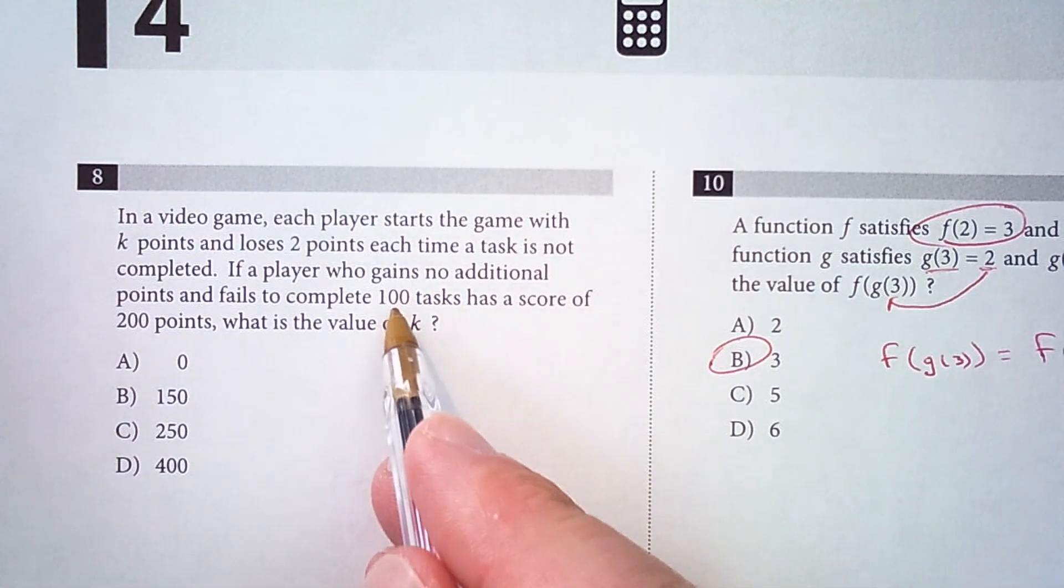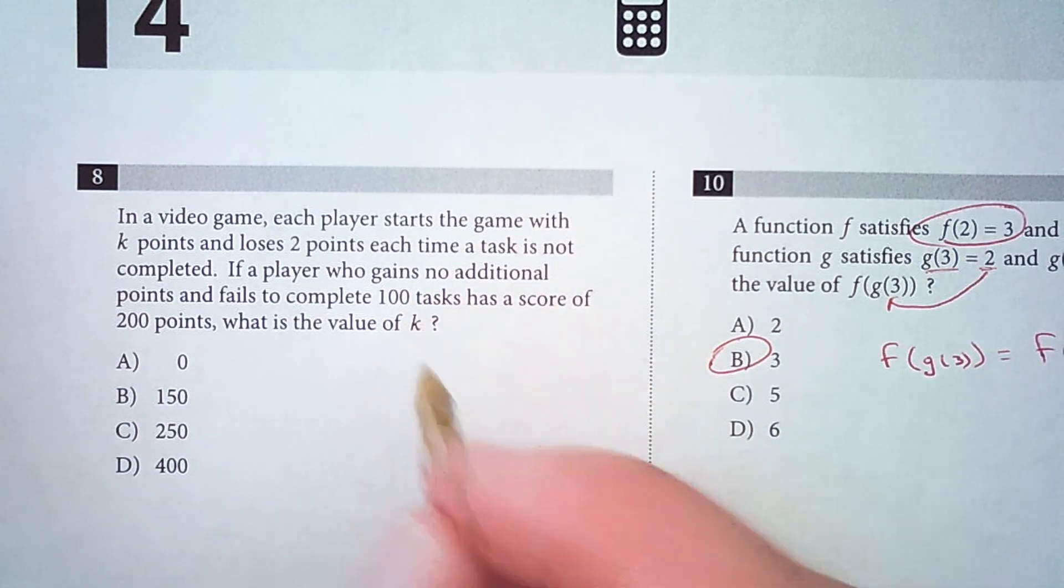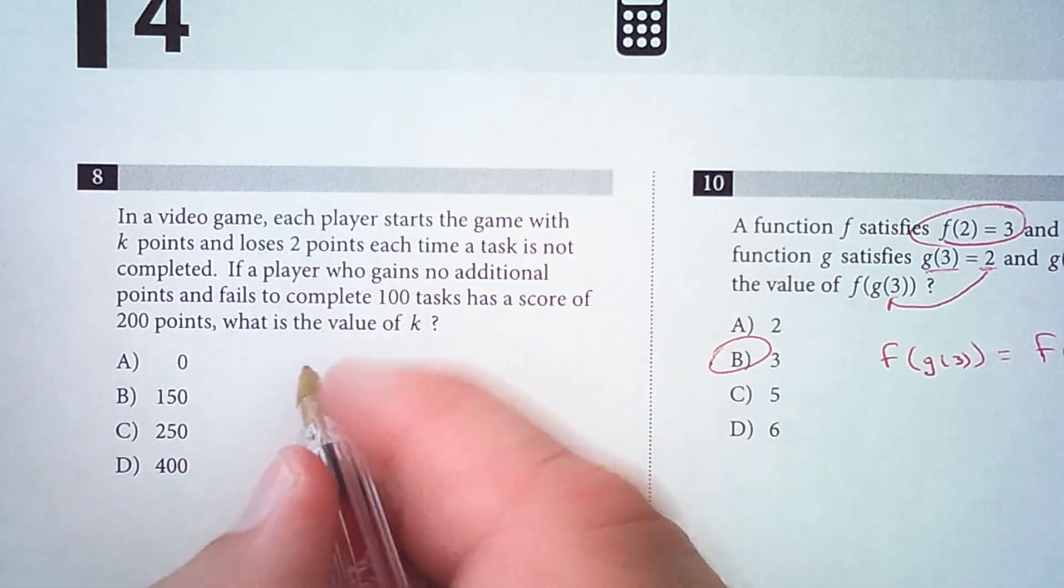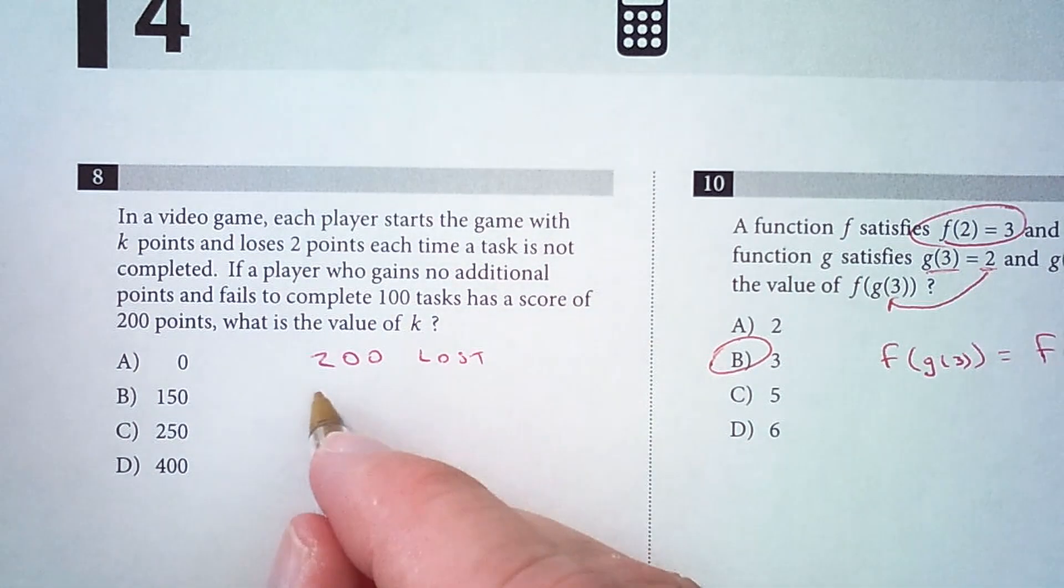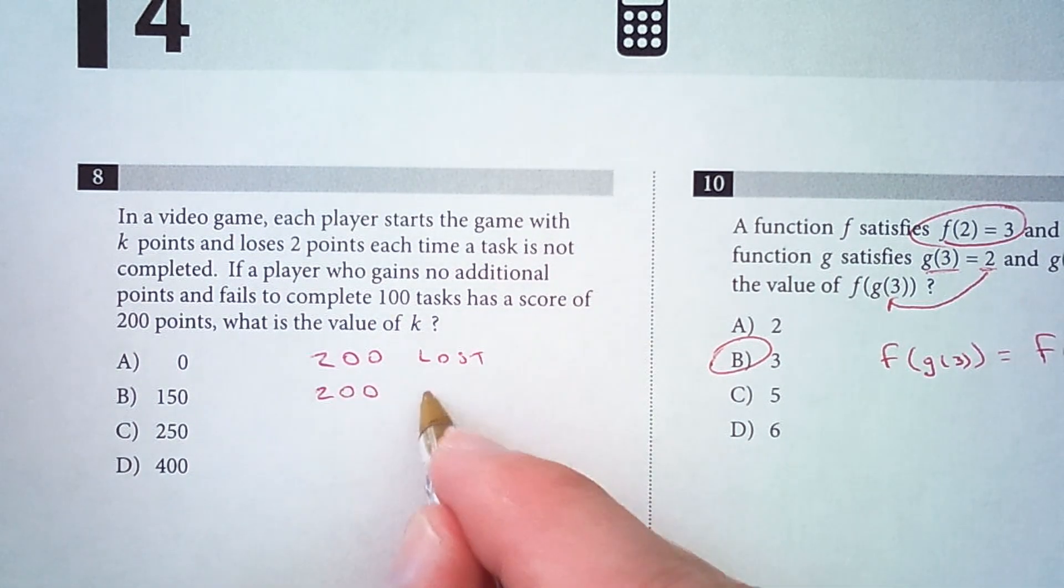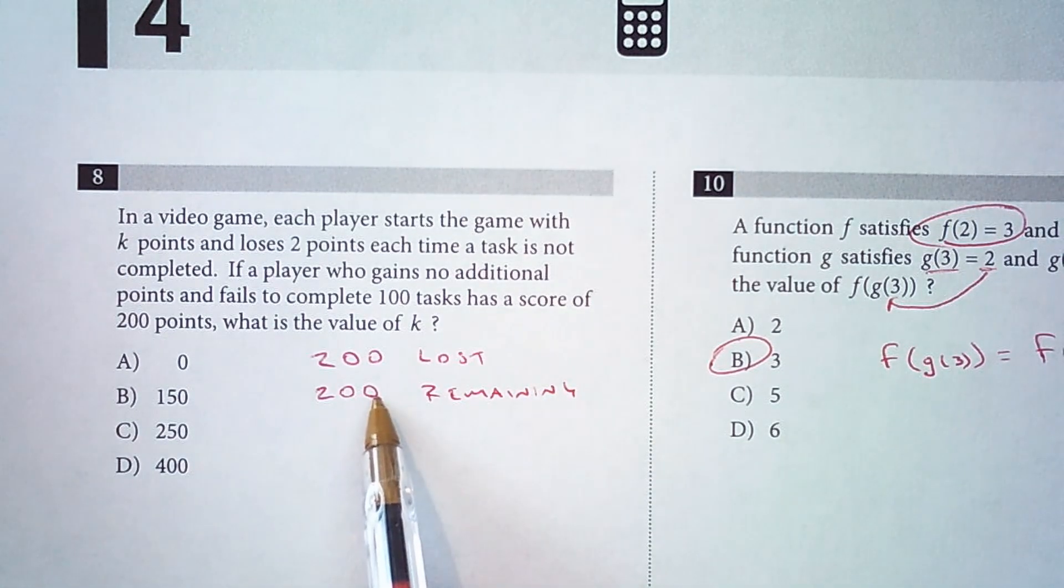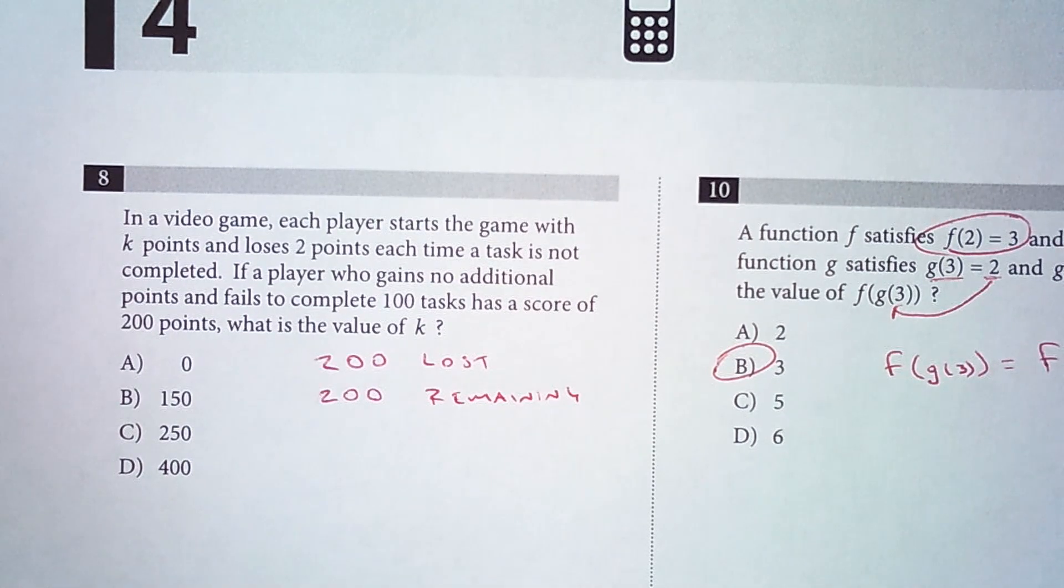So 100 failed tasks means you lost 100 times 2 points. So that's 200 points lost and 200 points remaining. So if you lost 200 and you still have 200, that means you must have started with 400.